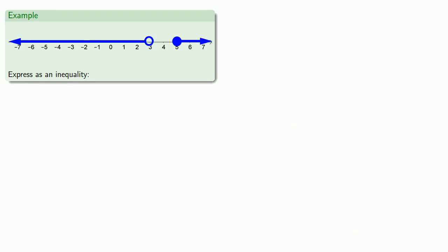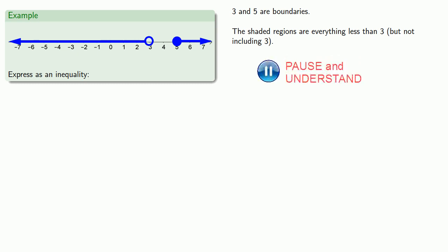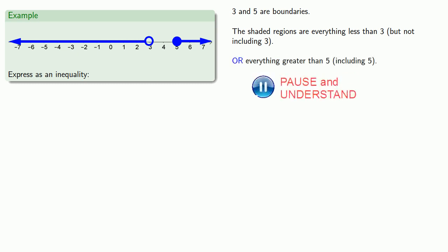It's also important to be able to go back from the graph of the inequality. So, here we see that 3 and 5 are boundaries. The shaded regions are everything less than 3 but not including 3, or everything greater than 5, including 5. So, the graph shows the inequality x less than 3 or x greater than or equal to 5.